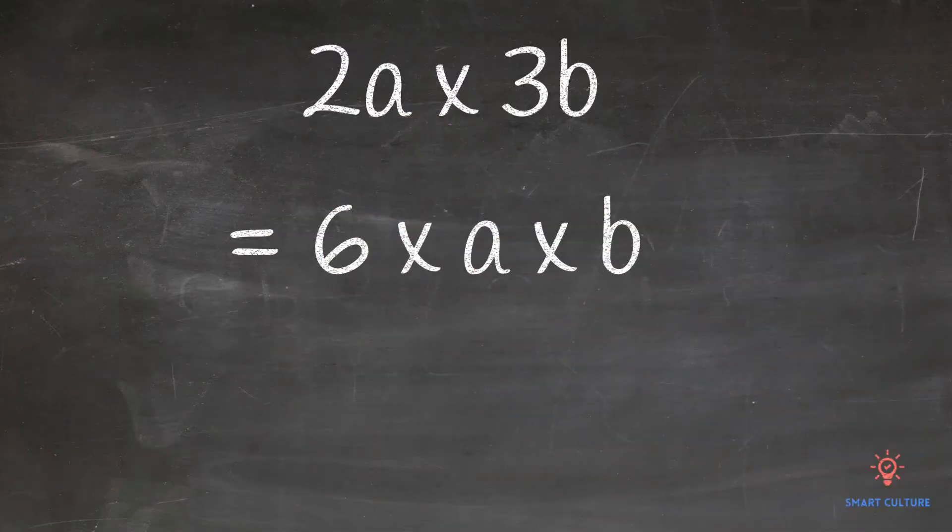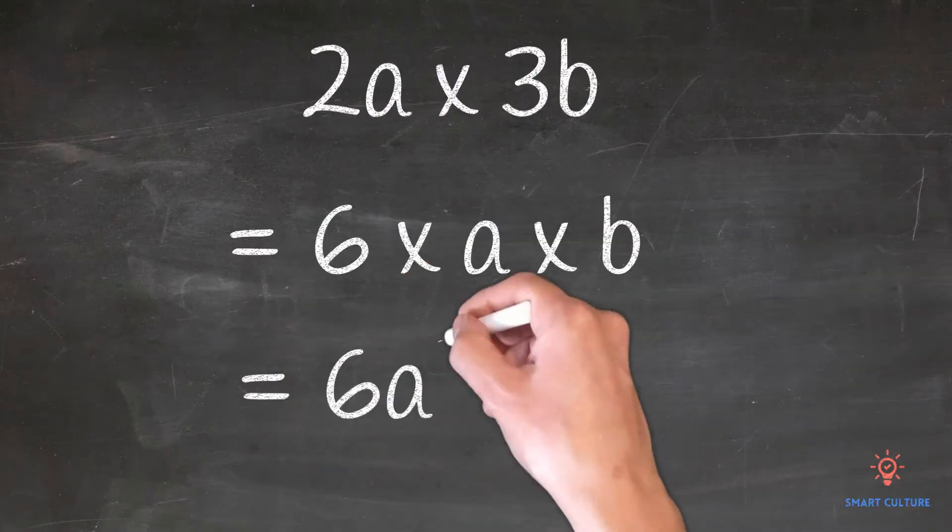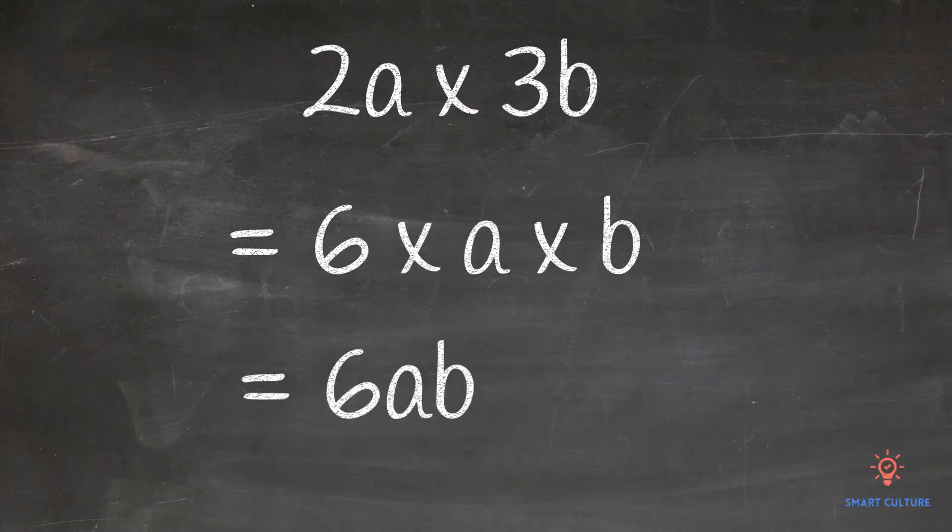Now we have to multiply the variables a and b. So the final answer will be equal to 6ab. So 2a times 3b is equal to 6ab.